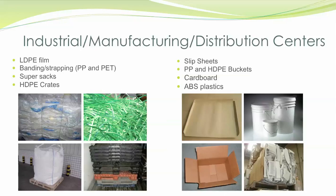Likewise, plastic banding can be made of PP, which is polypropylene, or PET, polyethylene terephthalate. Each of these types of plastic and the various colors they come in should be separated to obtain the highest rebate possible. And the same concept applies to color sorting ABS plastics.